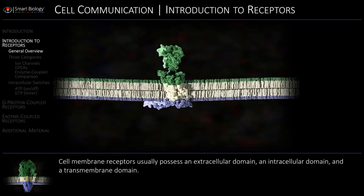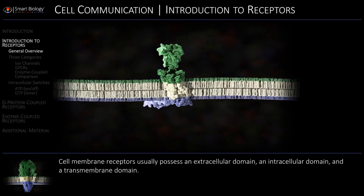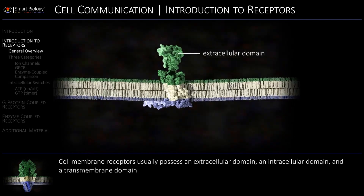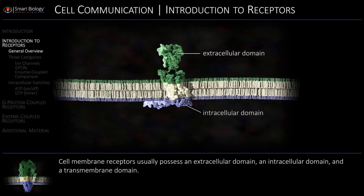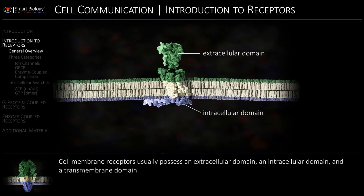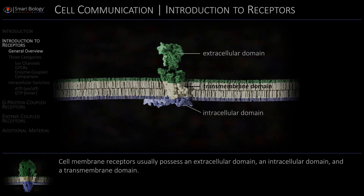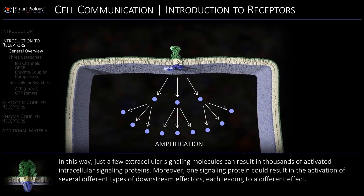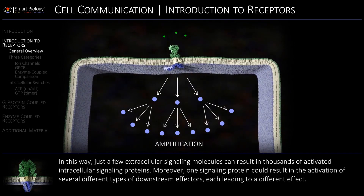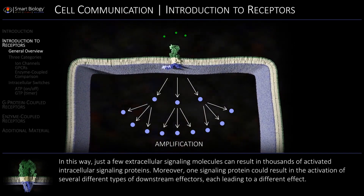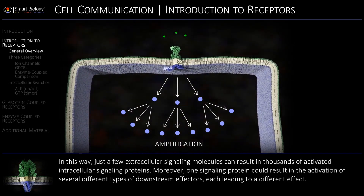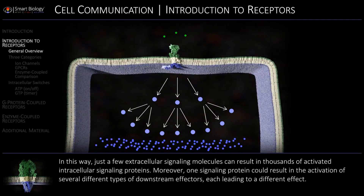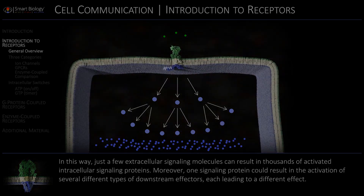Cell membrane receptors usually possess an extracellular domain, an intracellular domain, and a transmembrane domain. In this way, just a few extracellular signaling molecules can result in thousands of activated intracellular signaling proteins.